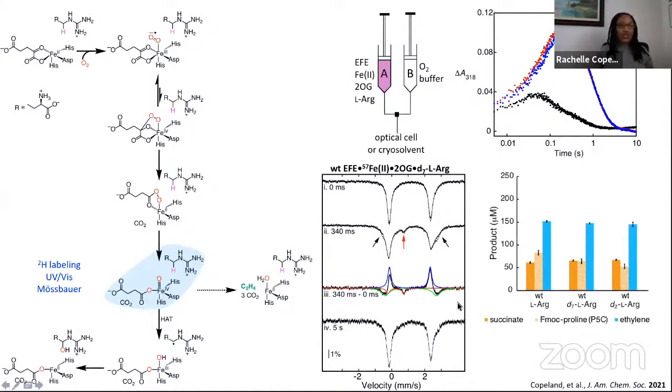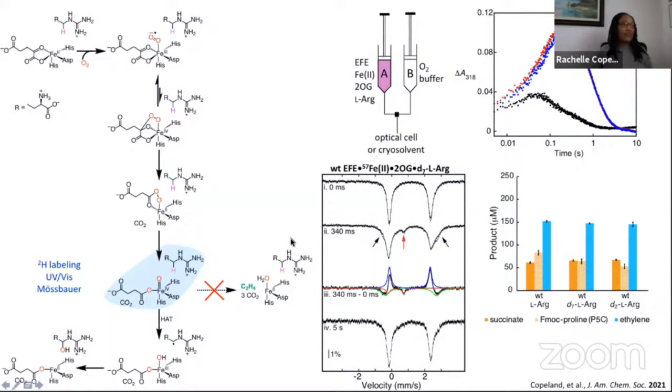These are the results that I'm showing here. As I mentioned, ethylene is the dominant product by a factor of around 2.5 to 1, so that's the blue compared to the orange bar here, ethylene to succinate. But importantly, regardless of whether we have unlabeled or labeled arginine, that ratio of succinate to ethylene does not change. What that tells us is that the ferryl intermediate is not the branch point for these two pathways. Furthermore, it tells us that the bifurcation point precedes ferryl formation. It's an intermediate that is upstream of the ferryl that is the branch point.